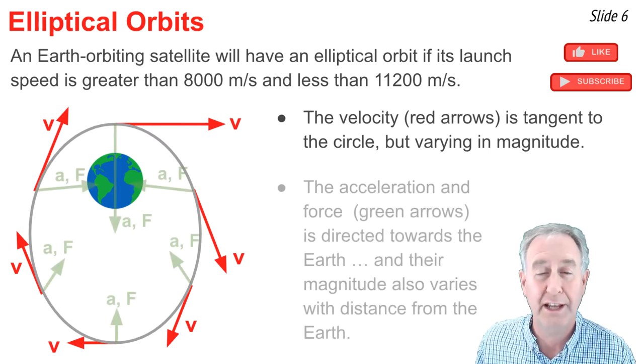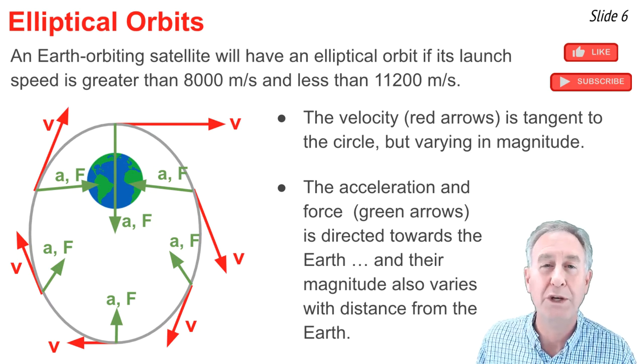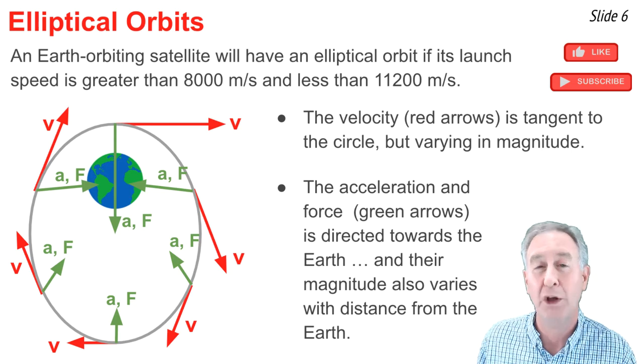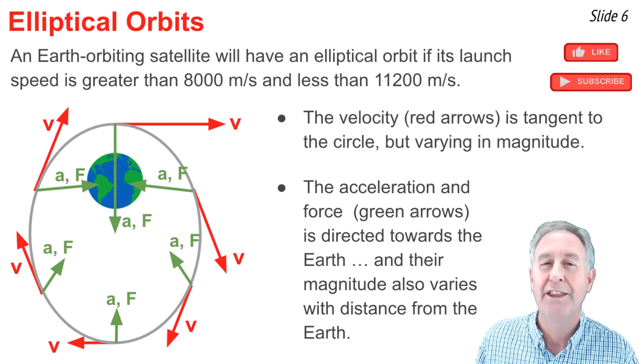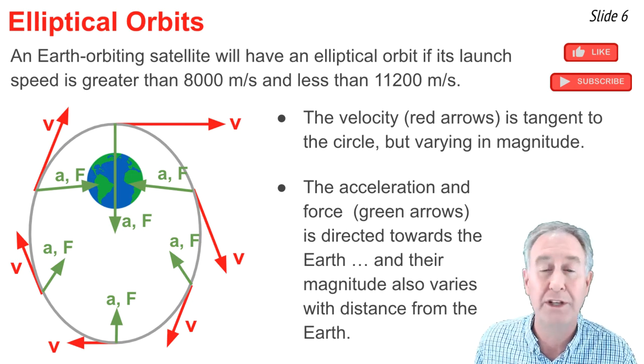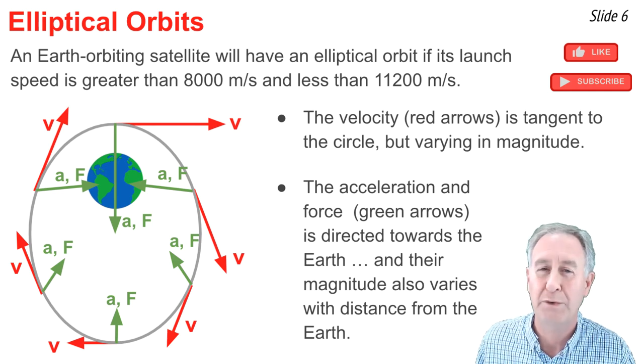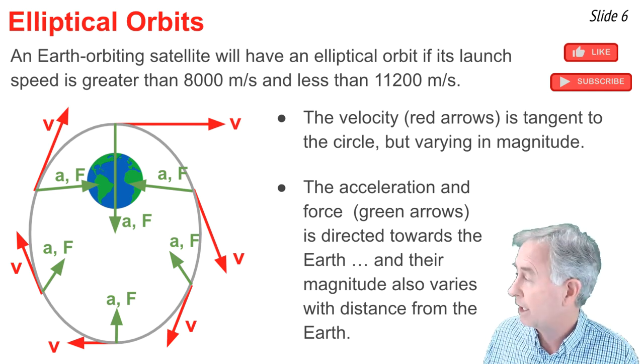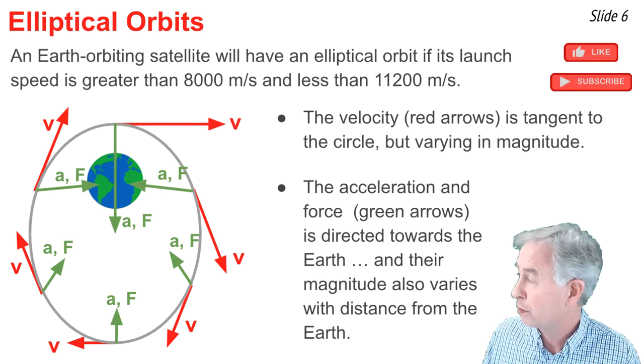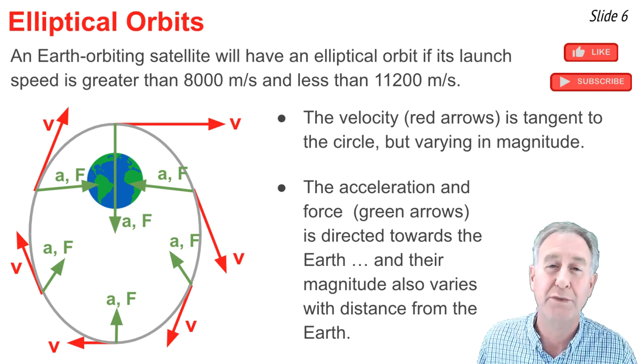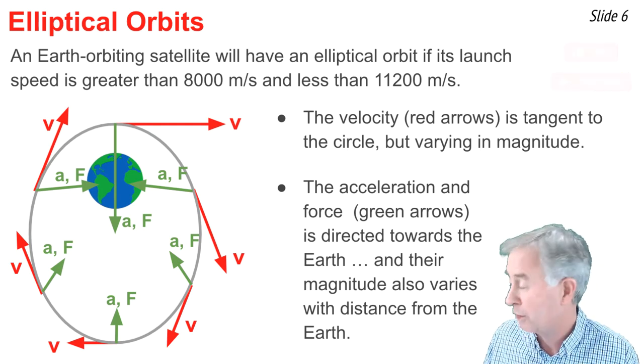As for the acceleration and net force vectors, those are gravity-influenced vectors, and so they're always directed towards the center of the circle at all points along the pathway of this elliptical orbit. The direction is always inward, but the magnitude is varying, as you'll see in the diagram, and influenced by the law of universal gravitation. When the satellite is closest to the Earth, the force of gravity and the acceleration that it causes is largest. And when the satellite is furthest from the Earth, the force of gravity and the acceleration it causes is smallest.